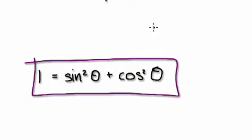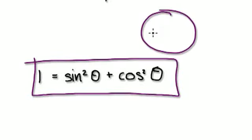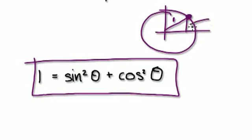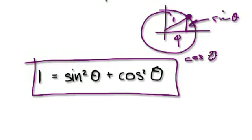You must know this: you can visualize this as a unit circle where the hypotenuse is 1. The height here is sine of x, and this here is cos of x. Then you can use Pythagoras. Note that theta and x are both variables — we can change them around. Remember this — it's very important.